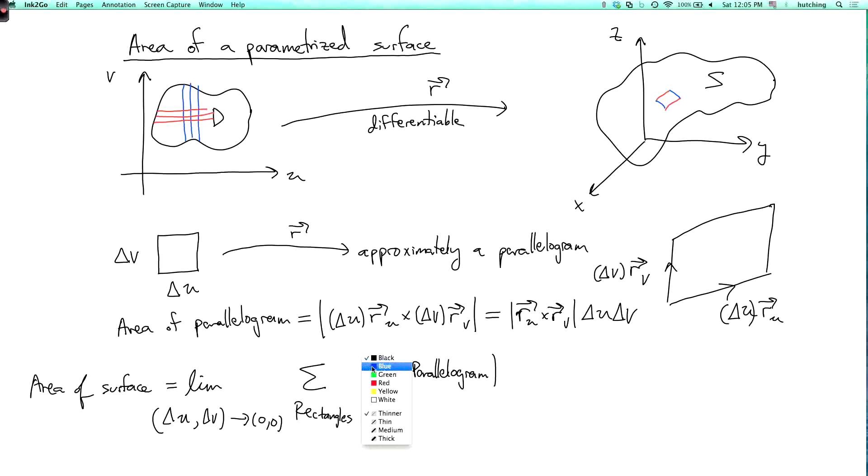And the area of the parallelogram, as we've just seen, is the magnitude of r_u cross r_v times delta u delta v. And then in the limit, when you sum up something, some function times delta u delta v, you get the double integral.